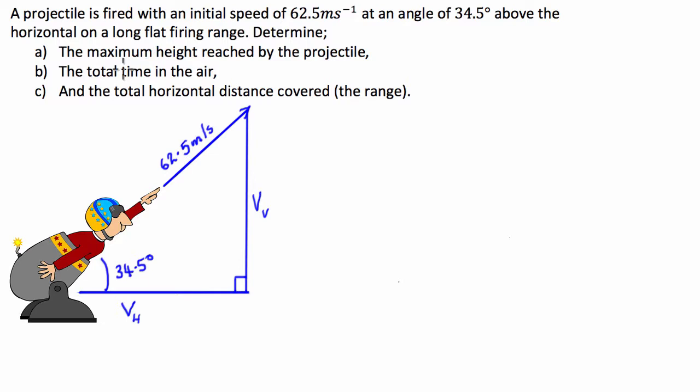The maximum height reached by the projectile, the total time in the air, and the total horizontal distance covered, so the range. So what I've done is I've prepared this vector triangle which represents the initial speed and the angle at which it's being fired from the horizontal.